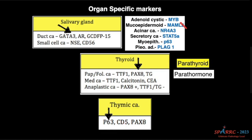Salivary gland — a lot of molecular changes are happening and luckily each molecular event has a marker. For adenoid cystic carcinoma, it is MYB; mucoepidermoid carcinoma, MAML2; acinic cell carcinoma, NR4A3; secretory carcinoma, STAT5A; myoepithelial carcinoma or myoepithelioma, P63; and pleomorphic adenoma, pleomorphic adenoma gene 1, otherwise known as PLAG1.